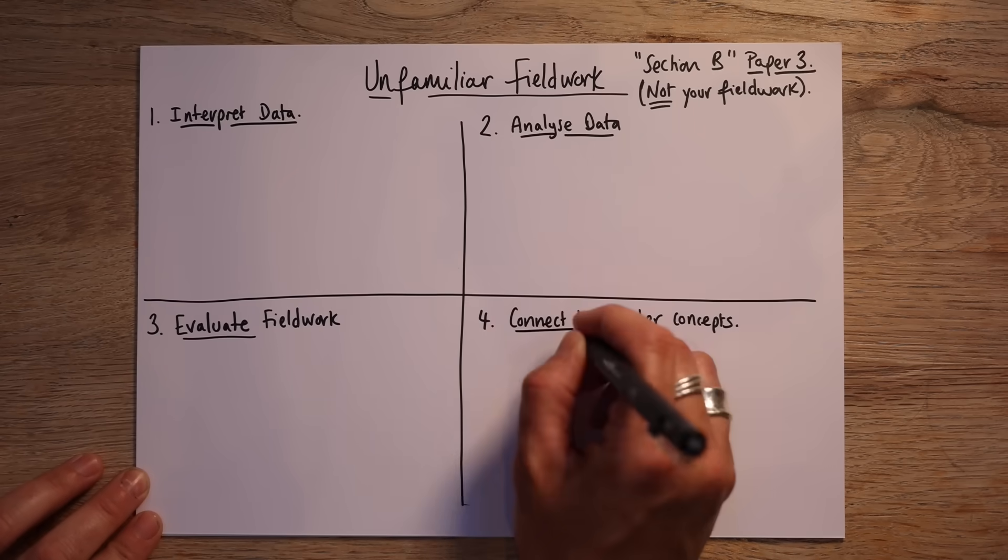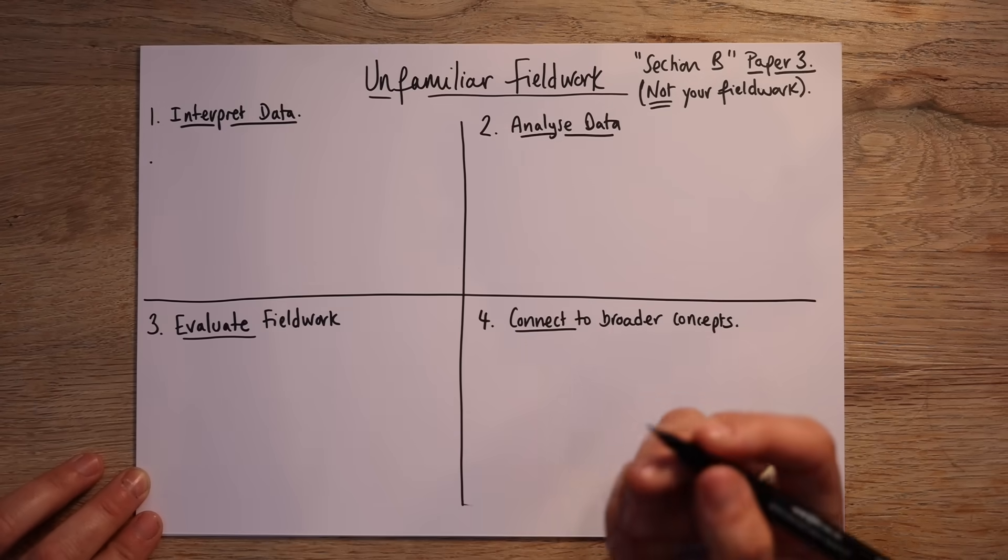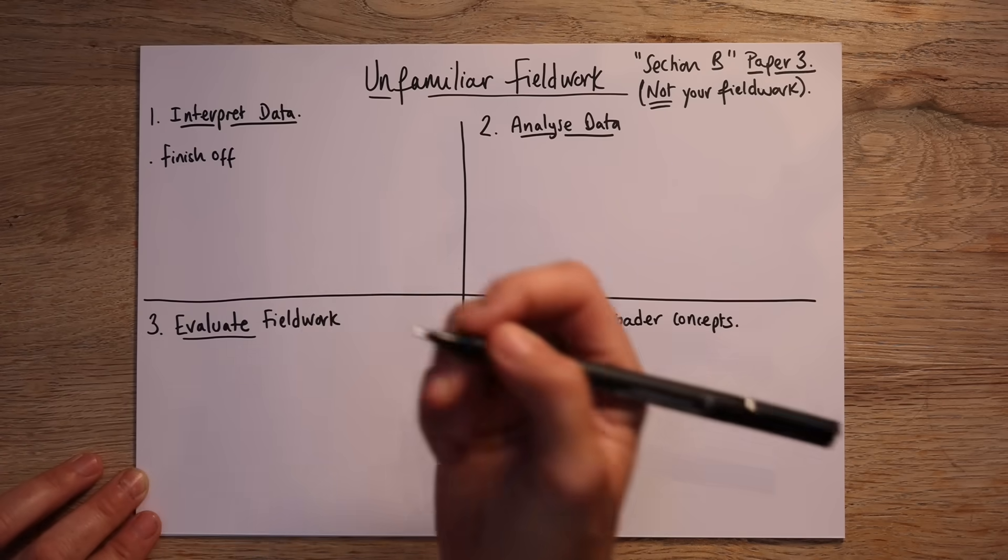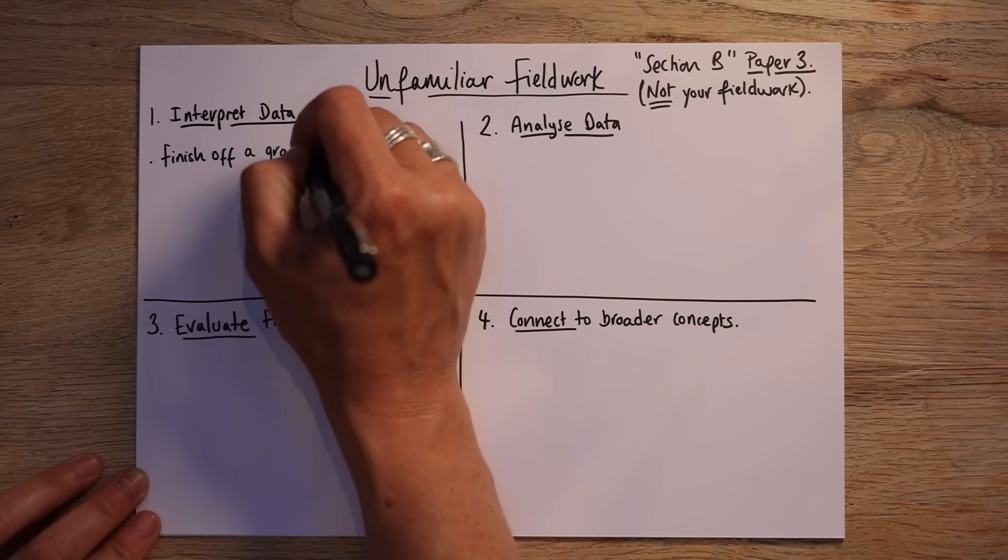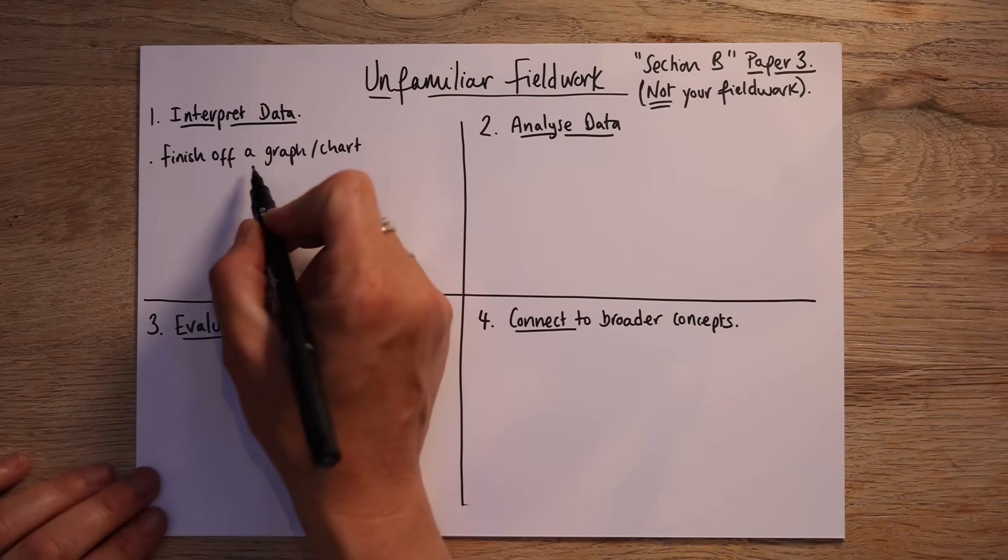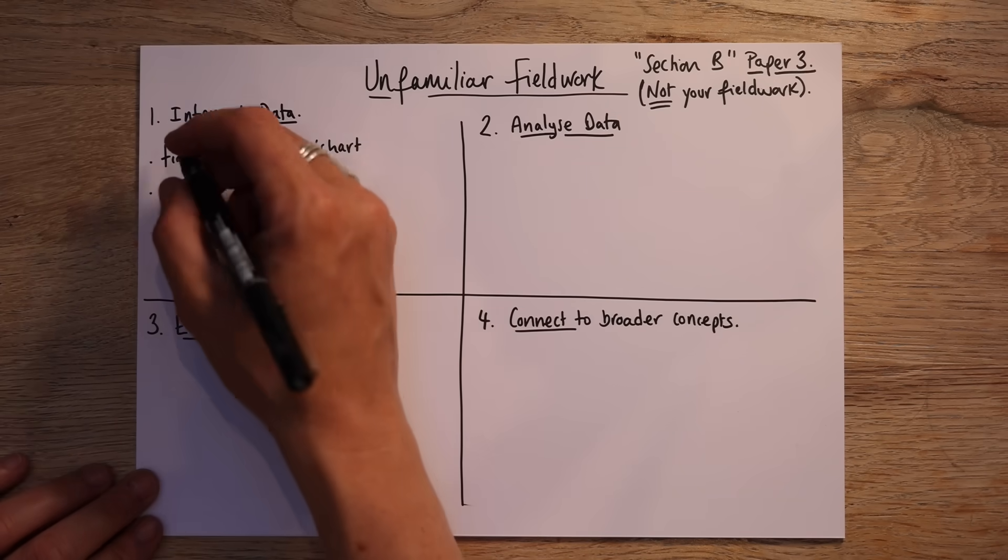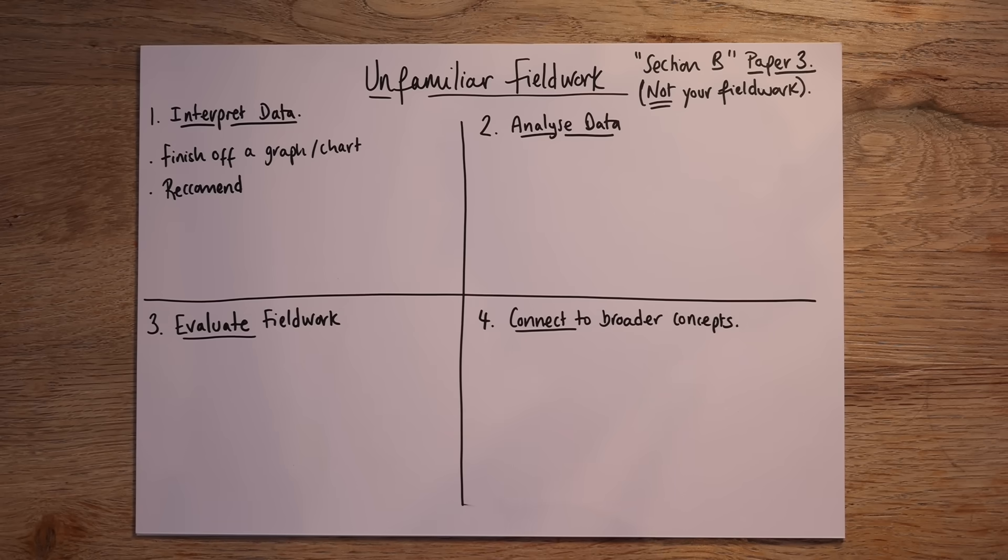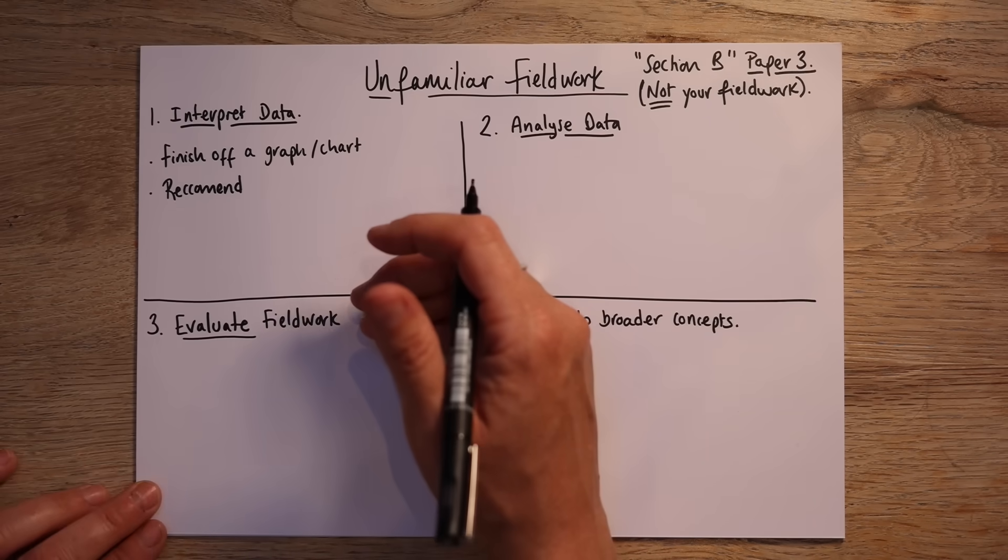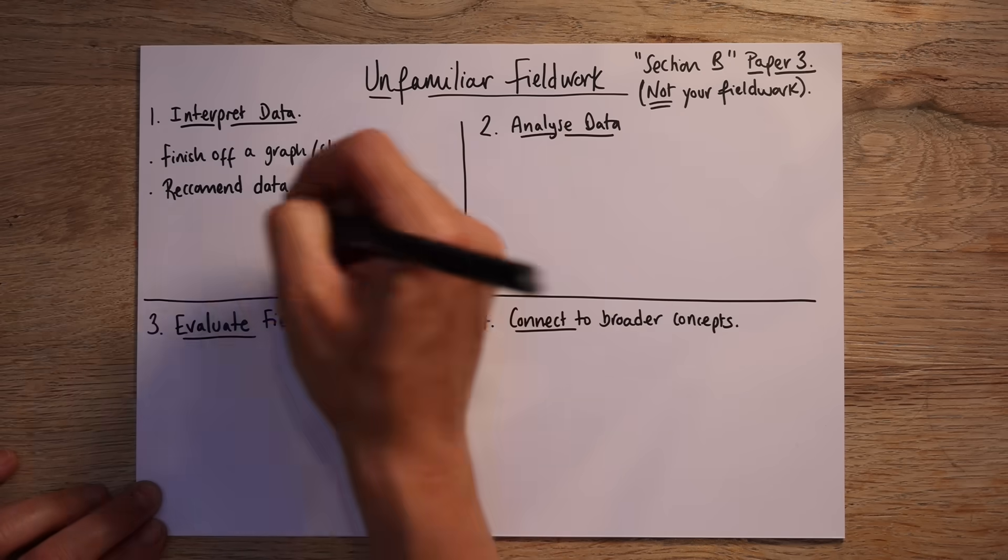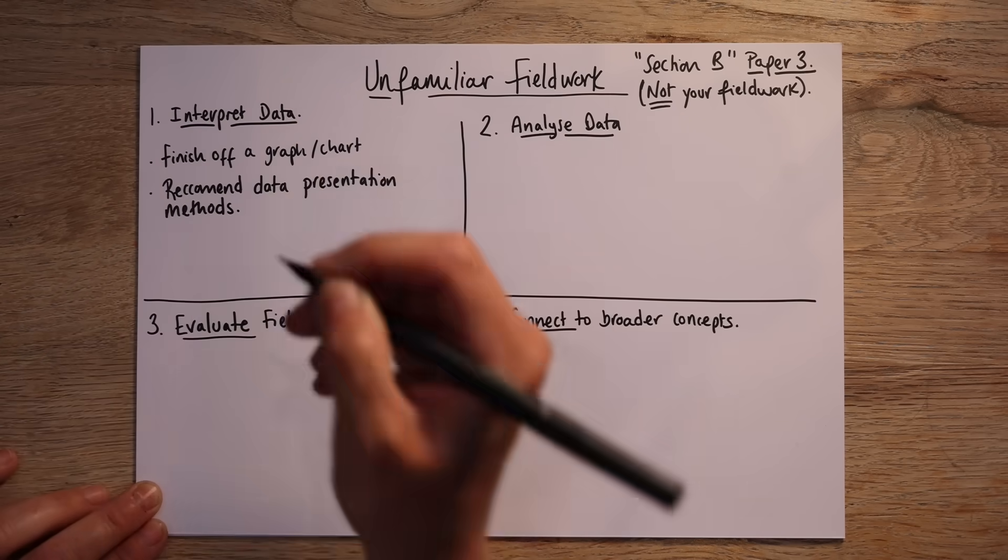So if we start with interpreting data, what you can expect. So you might be asked to finish off a graph or a chart. This happens actually in all geography exams. It will be a line graph or a bar chart or a pie chart, and you'll be just finishing it off, just adding in that final bit of data that they've given you. It might be that they give you a complete graph, but then they'll ask you to recommend.